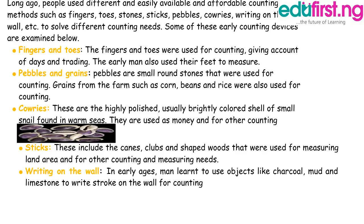Number one: fingers and toes. The fingers and toes were used for counting, giving account of days and trading. The early man also used their feet to measure.